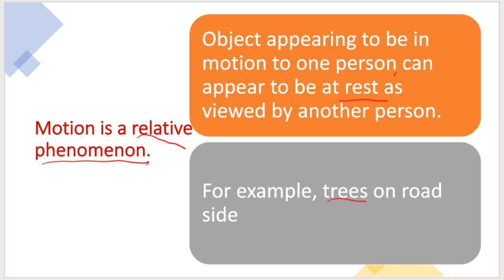They are at rest because there is no change in their position. But if you are travelling by car, the trees appear to move backward — that is what we call the relative phenomenon. So motion is a relative phenomenon: it appears to be motion to one person but at rest for another person.